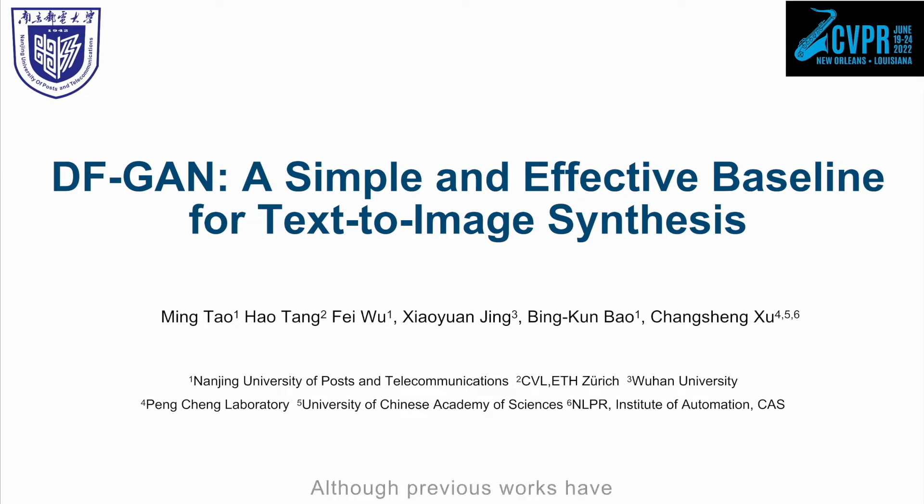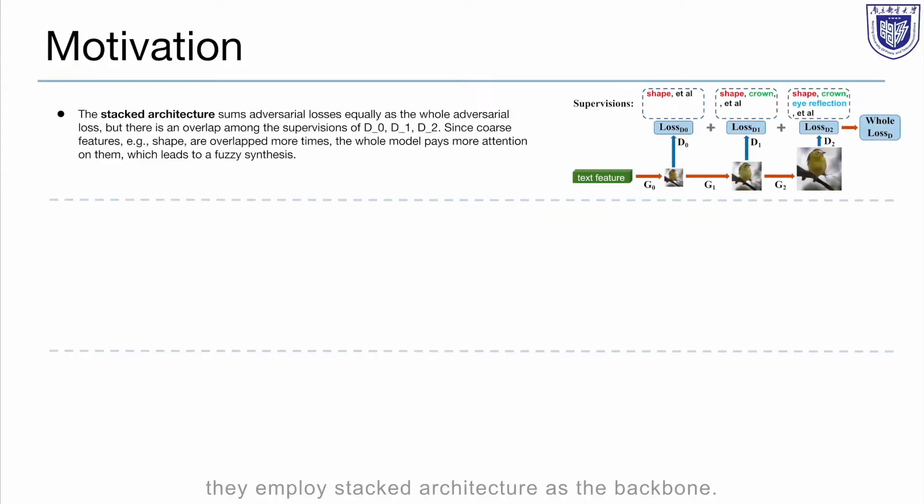Although previous works have shown remarkable progress, there remain three challenges. First, they employ stacked architecture as the backbone. But there is an overlap among the supervisions of different discriminators. Since coarse features are overlapped more times, the whole model pays more attention on them, which leads to a fuzzy synthesis.